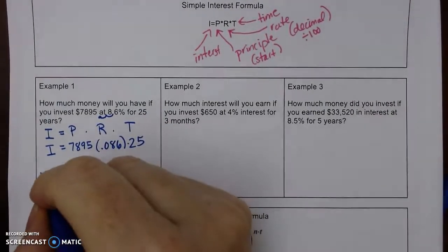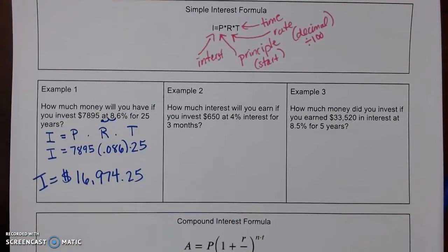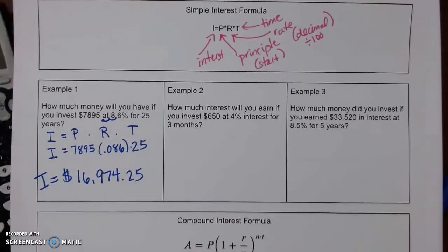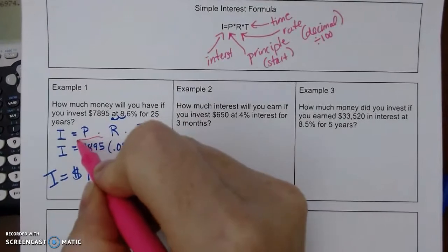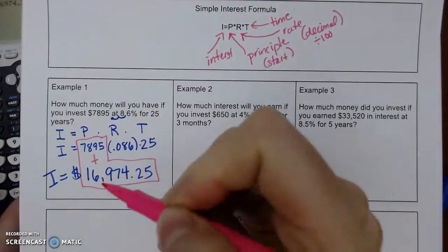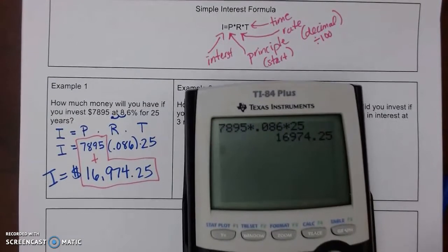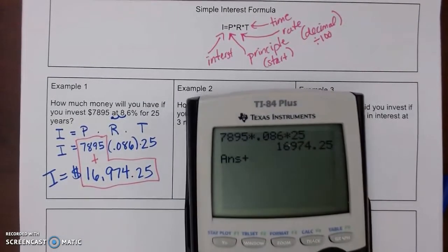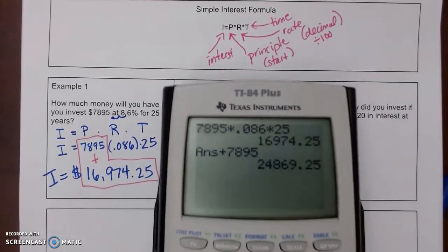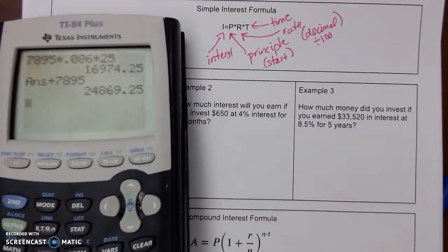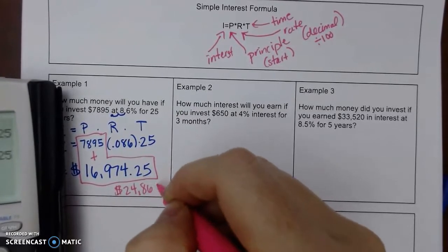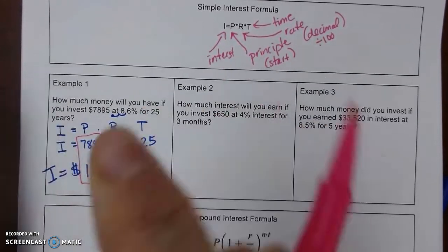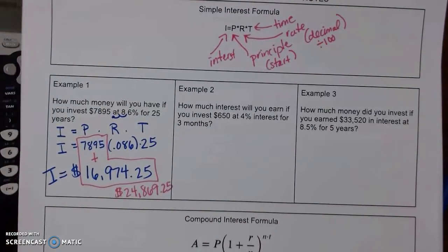Now, this is just our interest. So if we want our total money, we're going to take our principal and we're going to add our interest. So plus 78.95. So altogether we'd have about $24,000. They didn't want the interest, they wanted our total amount.